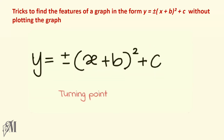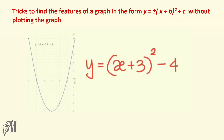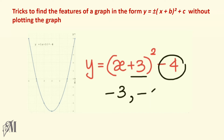Let's see how to find out the turning point of the graph by looking at the equation. The x-coordinate of the turning point will be minus b, and the y-coordinate will be c. So (minus b, c) is the turning point of any given graph of this form. Here, b is 3 and c is minus 4, so the turning point is (minus 3, minus 4). You can confirm it from the graph too.